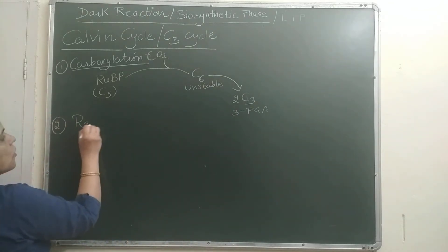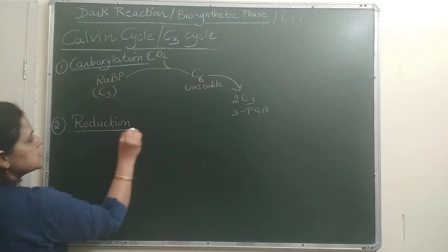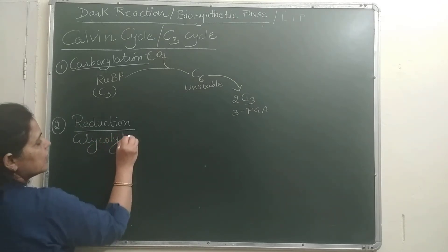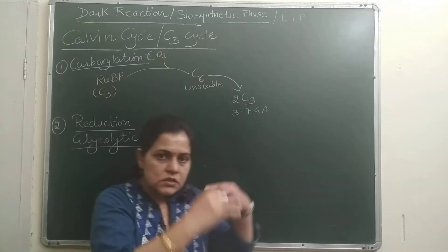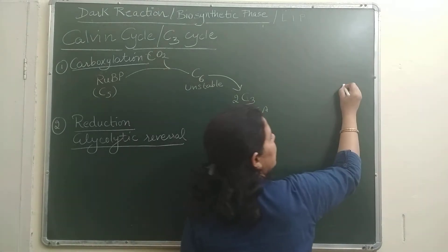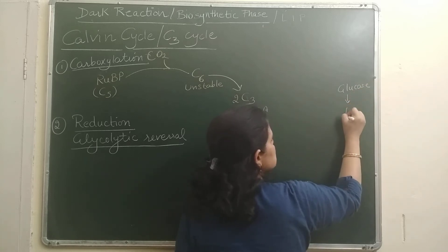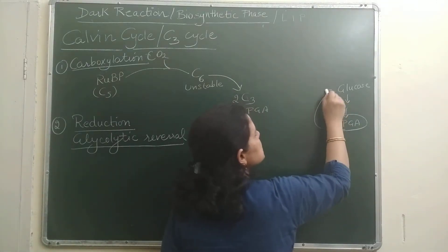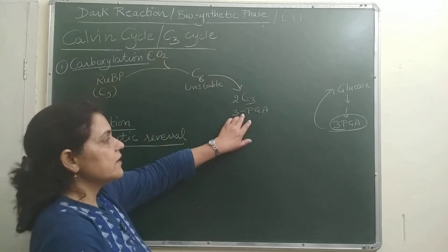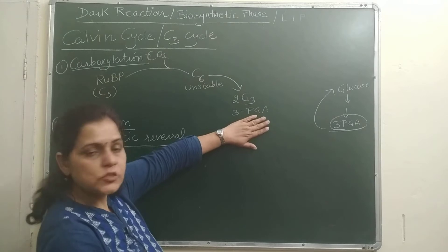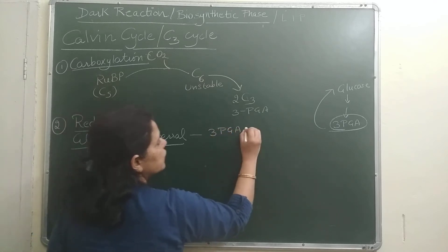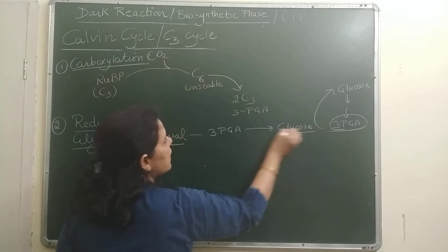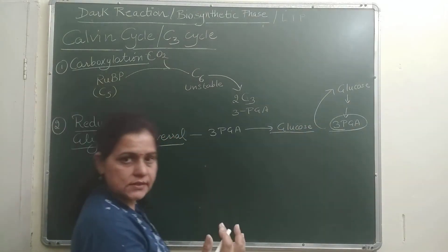Step number 2, second step is called reduction and it is also known as glycolytic reversal. What is happening? The reverse step of glycolysis is happening. Going reverse from glycolysis. In glycolysis we learned that from glucose what is formed? 3-phosphoglyceric acid. Here what will happen? This step will go reverse. So we will call this glycolytic reversal. And its reduction will happen into glucose. What will be formed from phosphoglyceric acid? In this step, here 3-PGA will be reduced to glucose. That's why we call it glycolytic reversal.